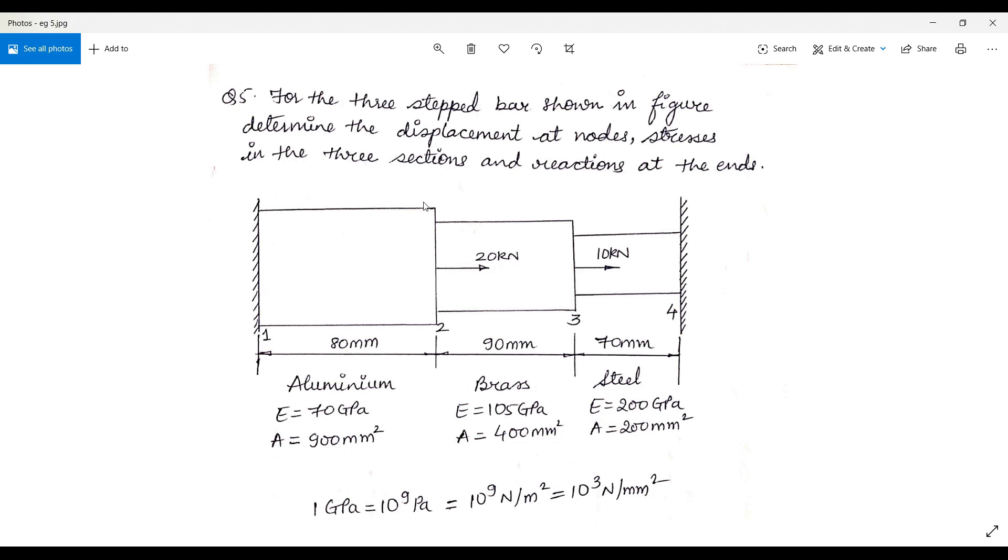There will be a node marked at this point because there is a change of geometry. Also here there will be a change of geometry. So I have marked four nodes.